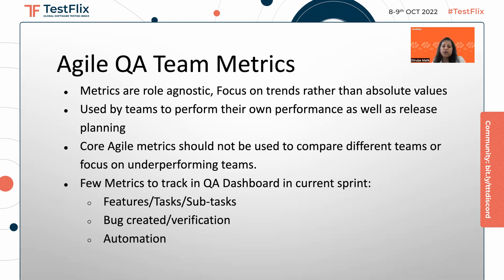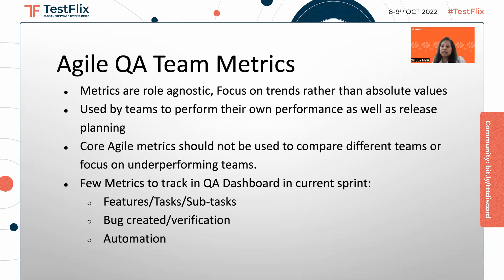I'd like to mention a few important QA metrics. What I do is basically create a QA dashboard where I can show specific metrics — for example, what feature tasks or subtasks QA team members are working on for a particular sprint, real-time status, how many bugs are created internally by individual QA team members, how many field issues came in, how many bugs they are verifying, and automation statistics.